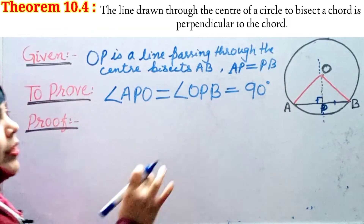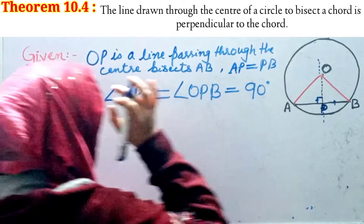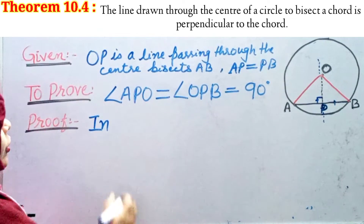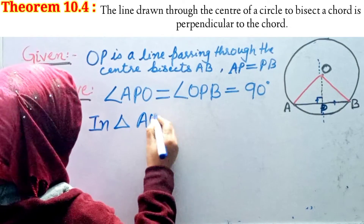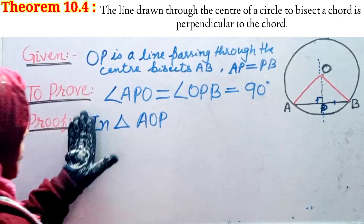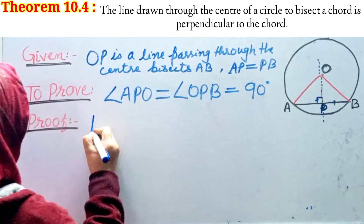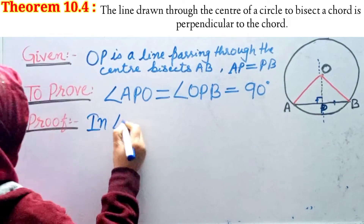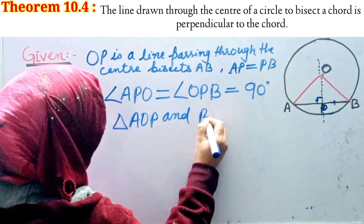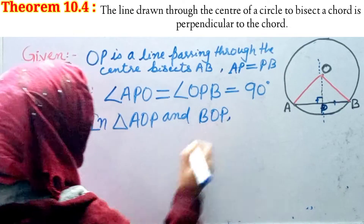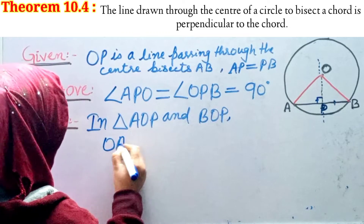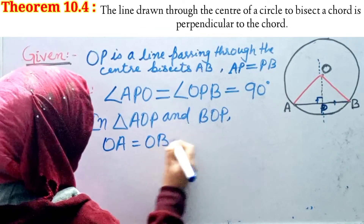So what do we do in the proof? We simply do a congruence proof, just like in Theorem 10.3. In triangle AOP and triangle BOP, what are the equal things? OA equals OB — why? Because OA and OB are radii of the same circle, so the radii are the same.